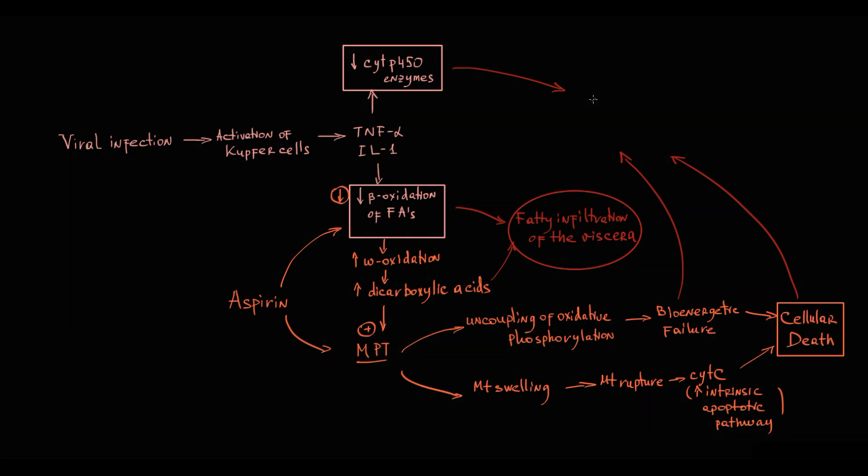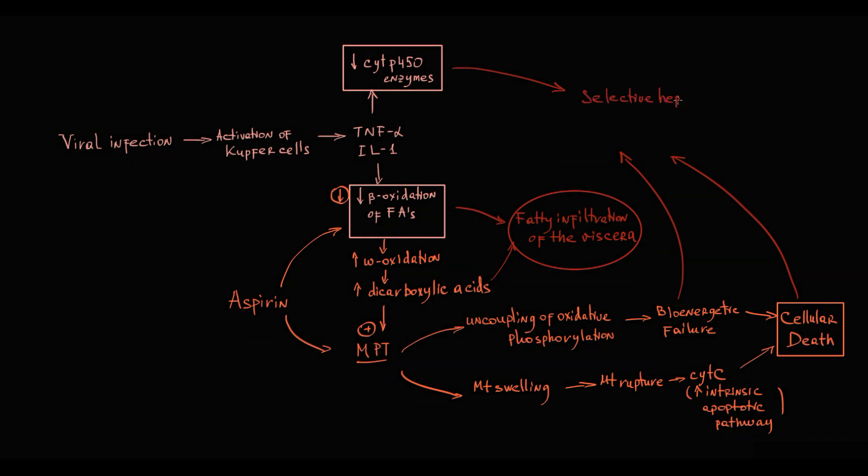Because massive amounts of hepatocytes die, liver tissue becomes less functionally capable. That's why the second characteristic feature of Reye syndrome is selective hepatic dysfunction.